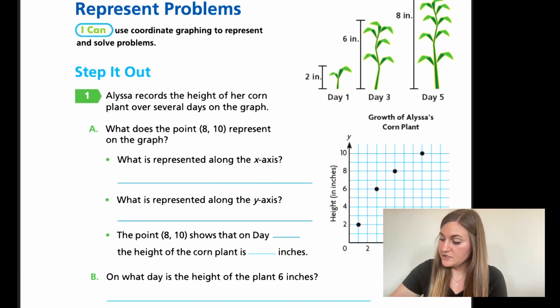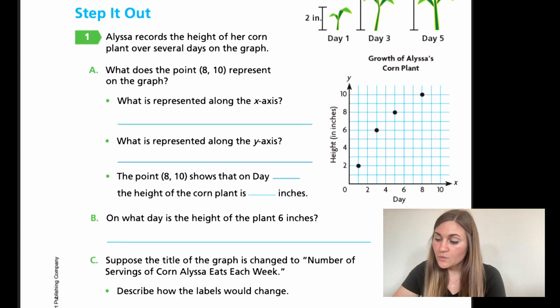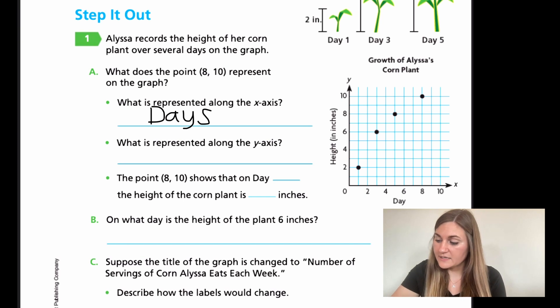Moving into the lesson on page 481, we have a step it out. It says Alyssa records the height of her corn plant over several days on the graph. For A, what does the point (8,10) represent on the graph? So what is represented along the x-axis? On that x-axis, it has a label telling you those numbers, the 0 through 10 is showing days. What is represented along the y-axis? We have the height in inches.